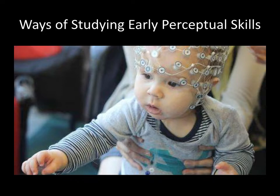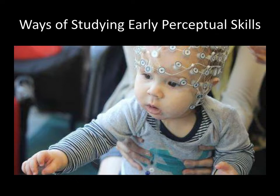The second method is habituation and dishabituation. A baby is first presented with a particular sight or sound repeatedly until they habituate — get used to it and lose interest. Then a slightly different sight, sound, or object is presented. The researcher measures whether the baby shows renewed interest. If the baby does, that's dishabituation, meaning the baby perceives some kind of change. There's a YouTube video in the next slide to show what this looks like in real life.